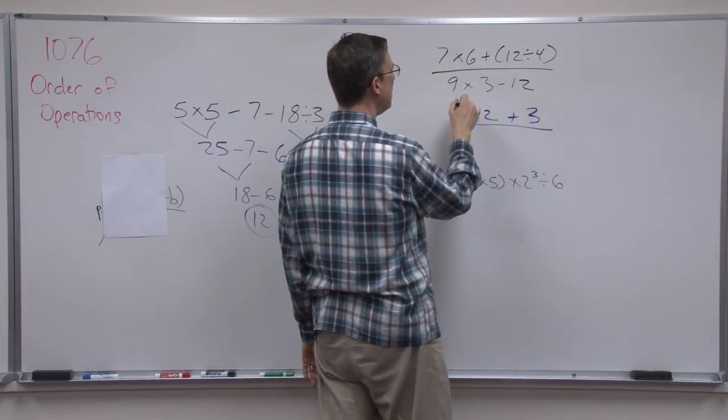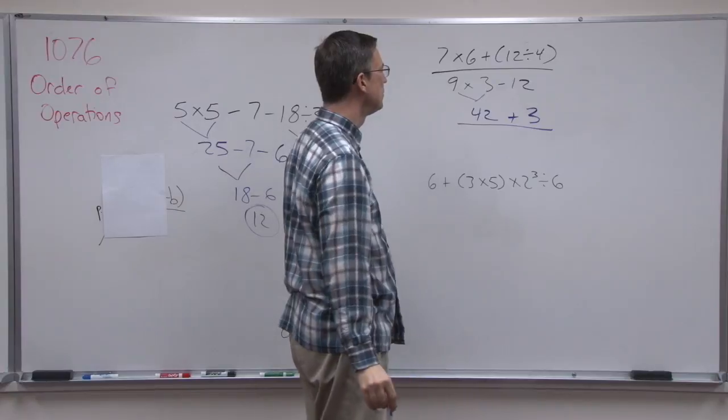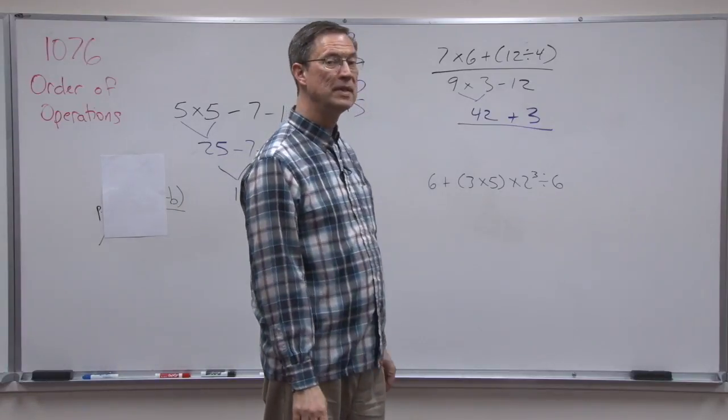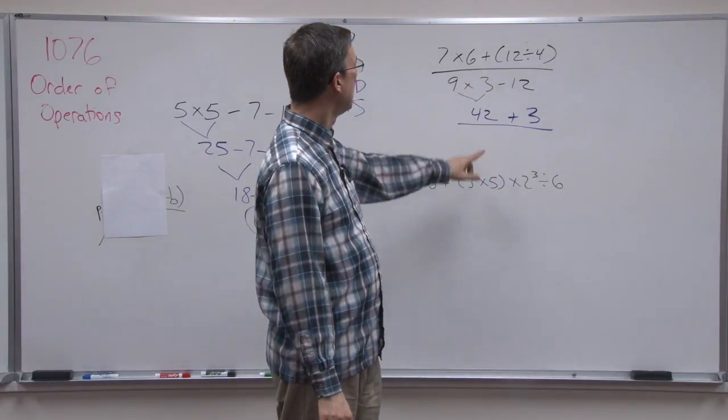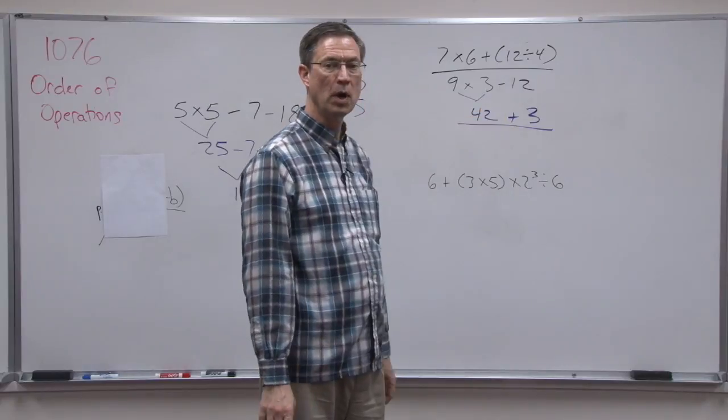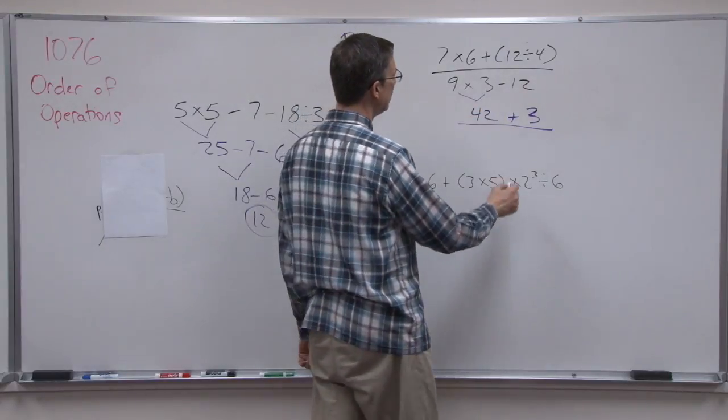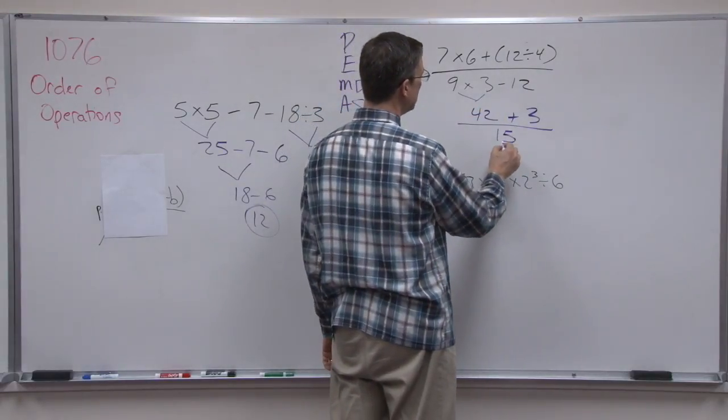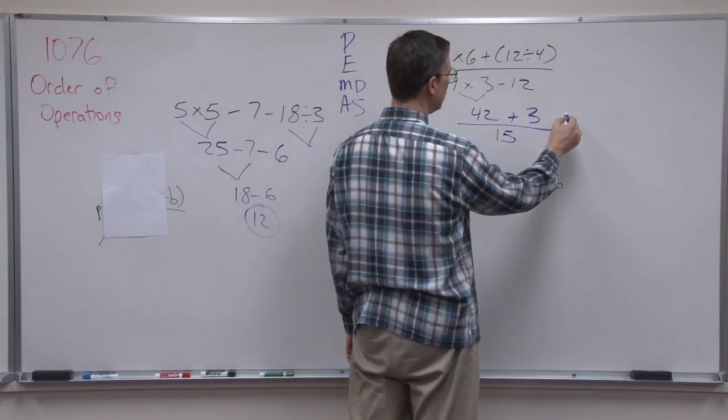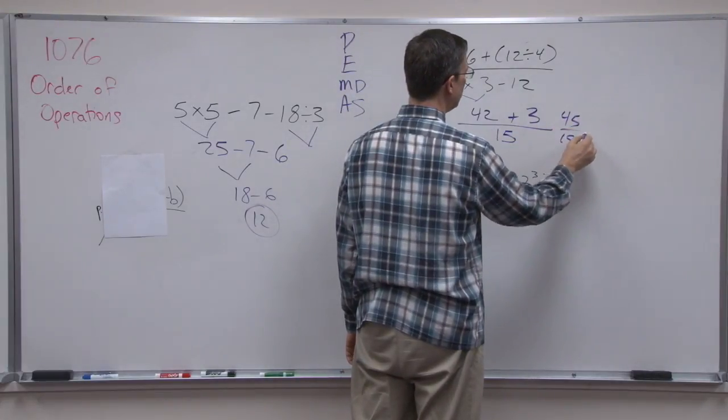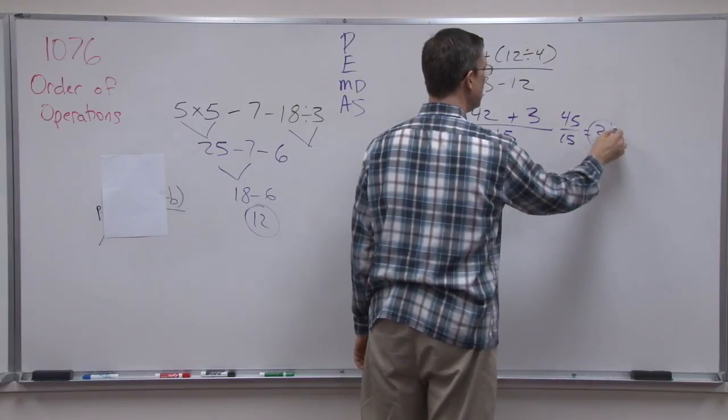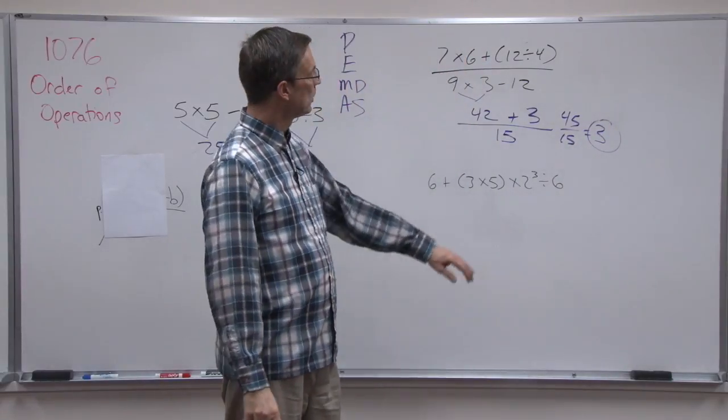Now here on the bottom, I'm going to take the 9 times 3 and get 27, and then subtract 12. 27 subtract 12 is 15. 42 plus 3 is 45 over 15, which when I reduce that, I would get 3.